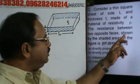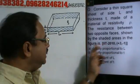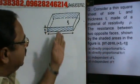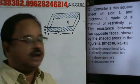The resistance between two opposite faces shown by the shaded areas in the figure is... Now, this is the shaded area. So, this shaded area's resistance is going to be determined.